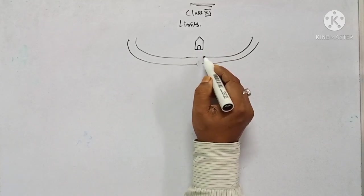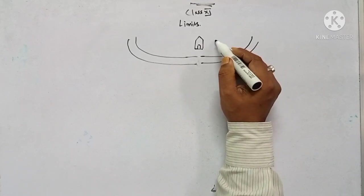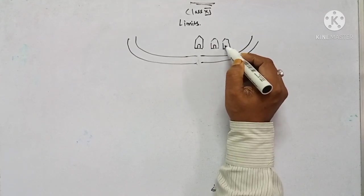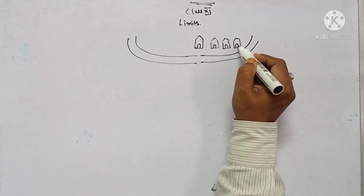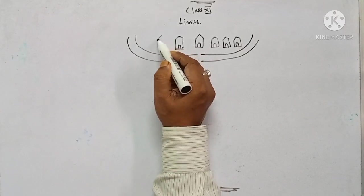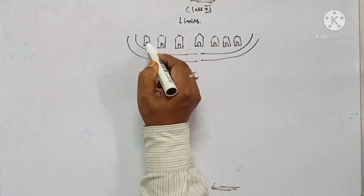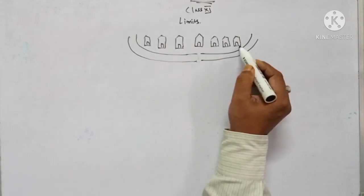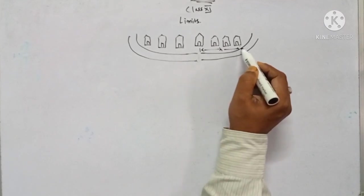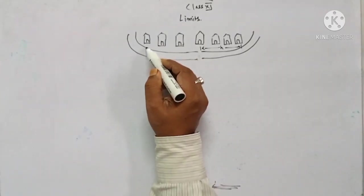On the right side there are three houses and on the left side there are three houses. The distance between the third house and your house is called H — both from the right side and from the left side.